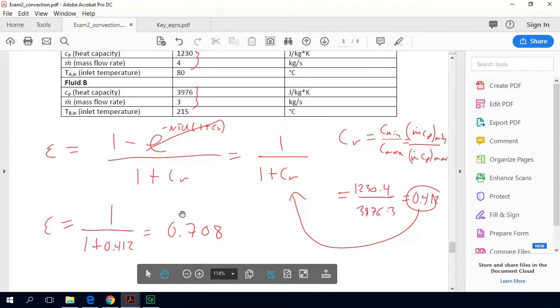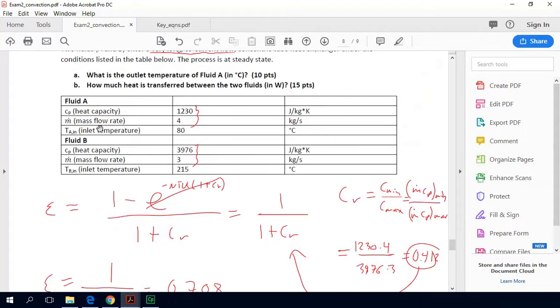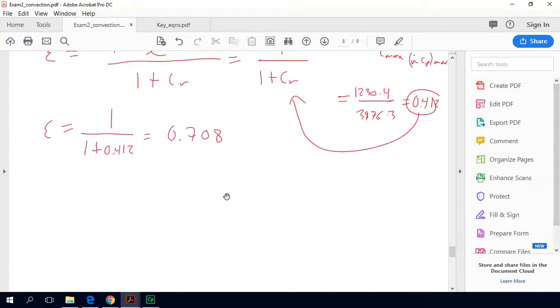So what this means is that the temperature change that will be undergone by our minimum fluid will be 70.8% of the maximum possible temperature change that it could undergo, which would be taking our cold fluid from its inlet temperature all the way up to the inlet temperature of our hot fluid. So our cold fluid is fluid A, and our hot fluid is fluid B. So let's list out what that effectiveness means. So we have a number for our effectiveness. Now we need to relate that to the relative temperature changes of our fluids.